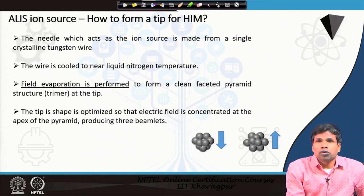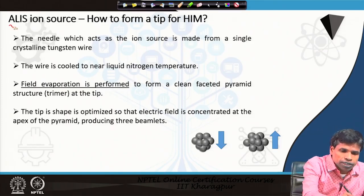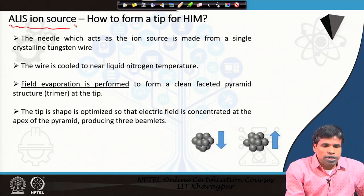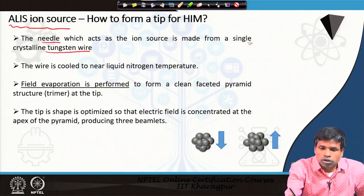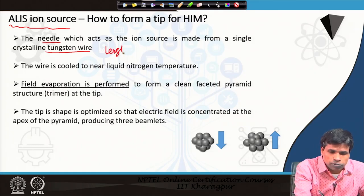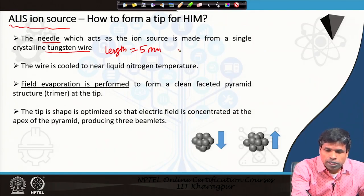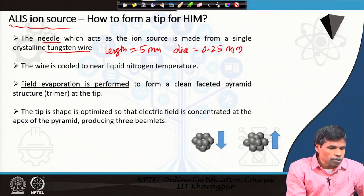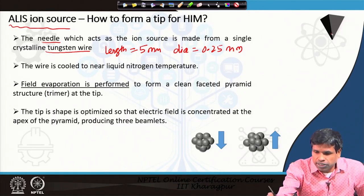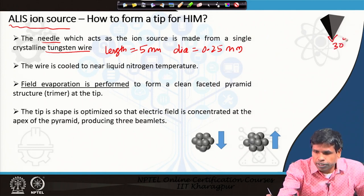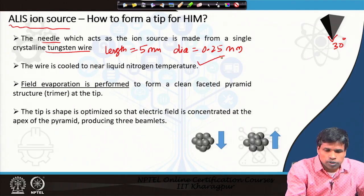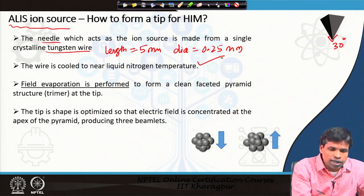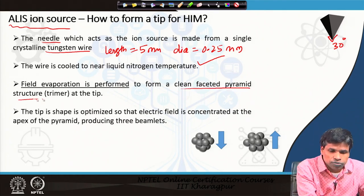How is the tip formed for the helium ion microscope? This was discovered in 2005 by ALIS Corporation. They took a single-crystalline tungsten wire of length around 5 mm and diameter around 0.25 mm. At the apex of this wire, there is approximately a 30-degree angle. This wire is cooled to near liquid nitrogen temperature, and then field evaporation is performed to form a clean faceted pyramid structure — called a trimer — at the tip.